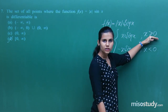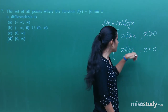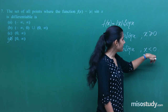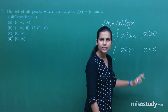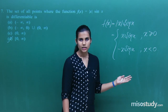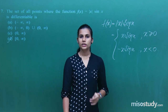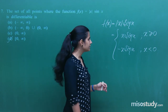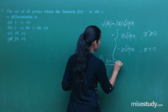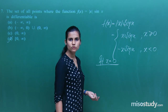Both pieces x·sinx and −x·sinx are differentiable on their respective domains. The only problematic point is x = 0. If it is differentiable at 0, the function is differentiable everywhere. We check by computing left-hand and right-hand derivatives at 0.